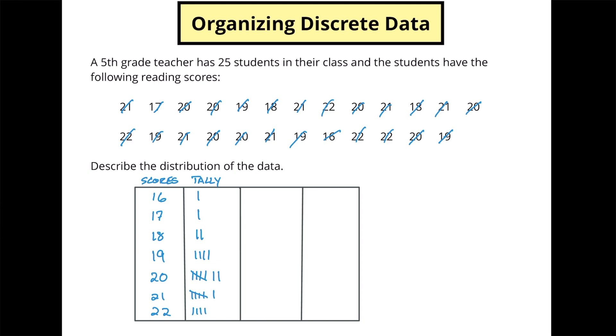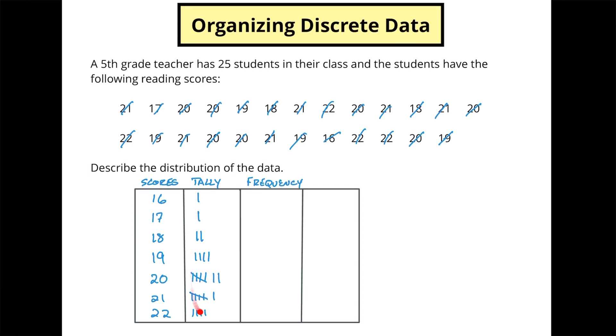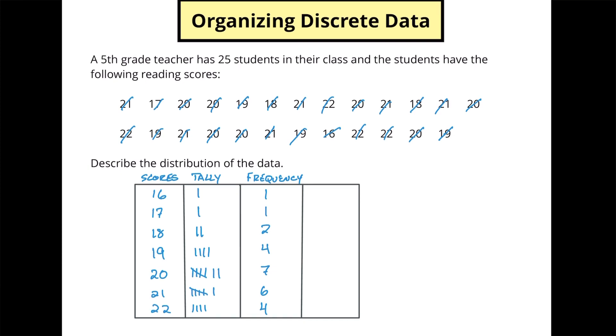And now what I'm going to do over here in the next column is I'm going to put the frequency. And the frequency is just a total of these, like a row total of these things. So we've got one for 16, one for 17, two for 18, four for 19, seven for 20, six for 21 and four for 22. And if we add these up, we should have 25 because there's 25 students. So here's where I check to see, did I get everyone? So here's 10, 17, 21, 22, 23, 24, 25. So I've got a total of 25.